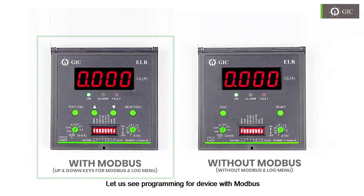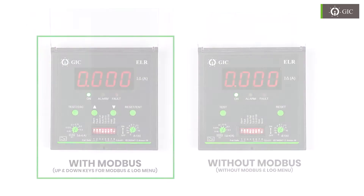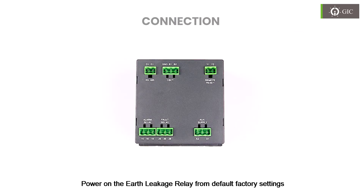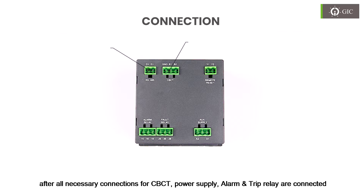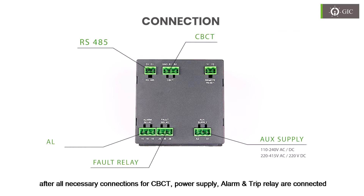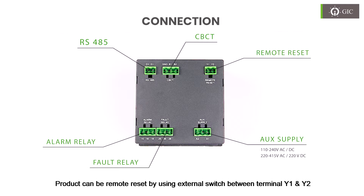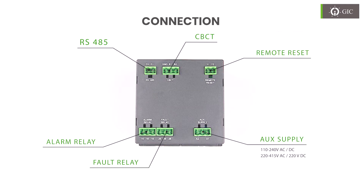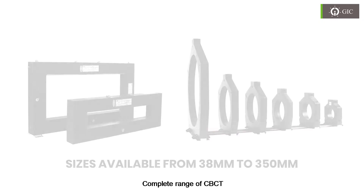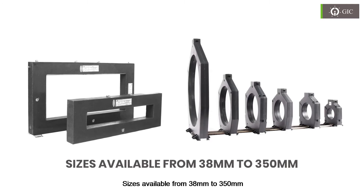Let us see programming for the device with Modbus. Power on the Earth Leakage Relay from default factory settings after all necessary connections for CBCT, power supply, alarm, and trip relay are connected. The product can be remote reset by using an external switch between terminal Y1 and Y2. Complete range of CBCT sizes available from 38mm to 350mm.